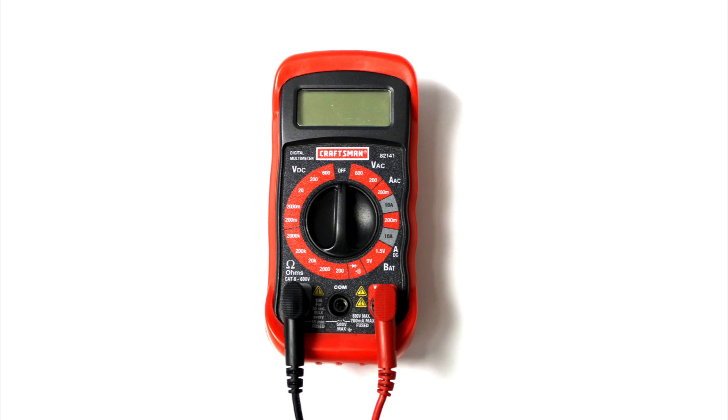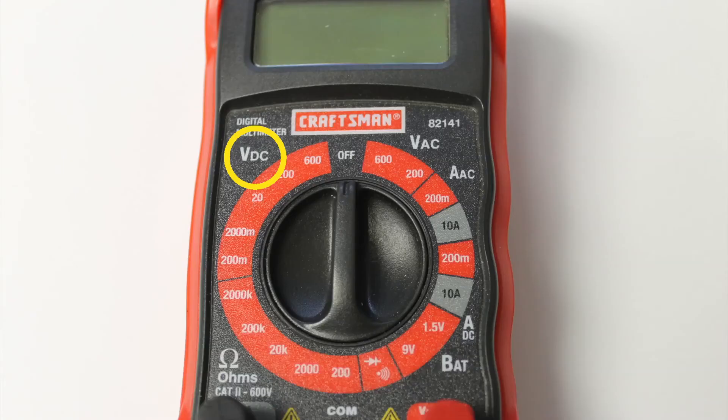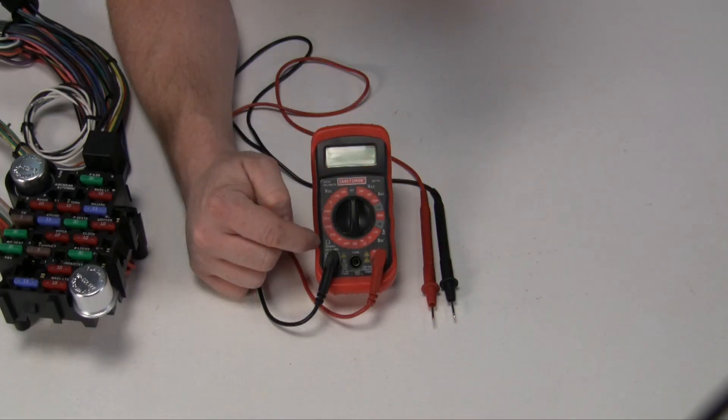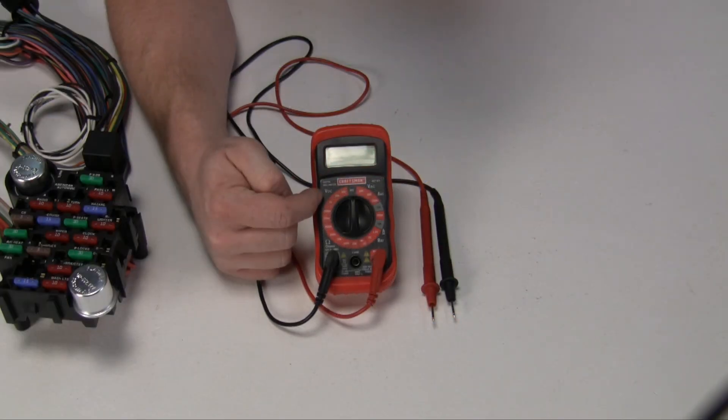This is a universal multimeter. There's going to be two settings we're going to be using on here: DC volts, which you'll set to 20 because it's a 12 volt system, and also ohms, which runs in different ranges here at the bottom. Ohms will be used for checking continuity. DC volts will be used for checking voltage.